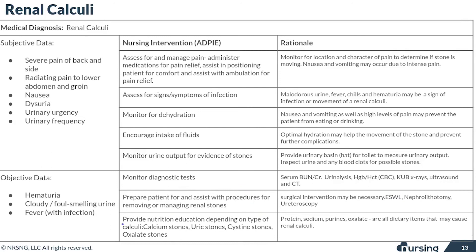Once the stones are out, it's important to educate patients on their diet to help prevent future stone development. The types of foods to avoid may vary based on the type of stone — calcium, uric, cysteine, or oxalate stones. Main dietary items that contribute to stones are too much protein, too much sodium, too many purines, and too much oxalate. Foods high in oxalate include strawberries, spinach, chocolate, tea, and peanuts. Foods high in purines include organ meats, which is probably the most common one.